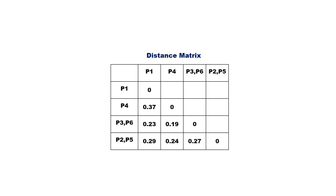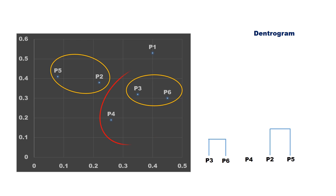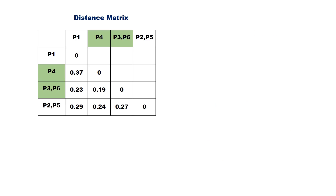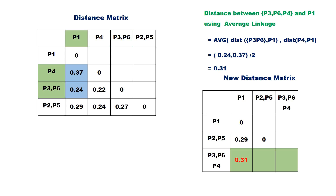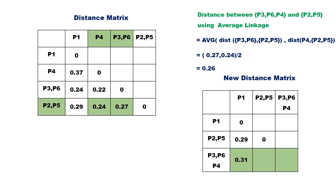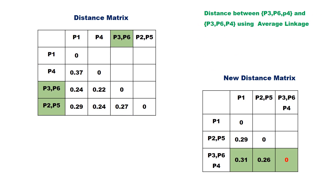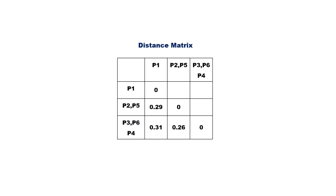Again, repeat the steps and find the minimum value. It is 0.19, which is the distance between cluster P3,P6 and P4. So P3, P6, and P4 together form the next cluster. Update the dendrogram and recalculate the distance matrix. Replace the separate entries for P3,P6 and P4 with a single entry P3,P6,P4. The distance between the new cluster and P1 is 0.31, and the distance between the new cluster and P2,P5 is 0.26. Here is the updated distance matrix.